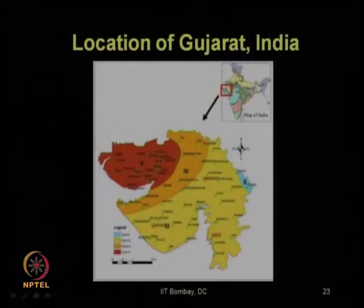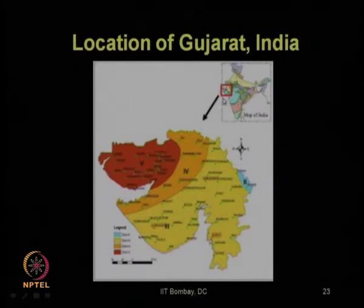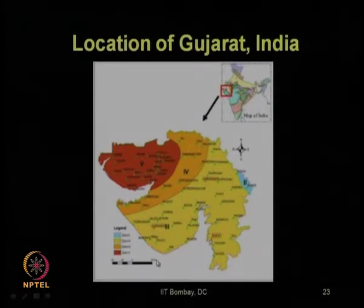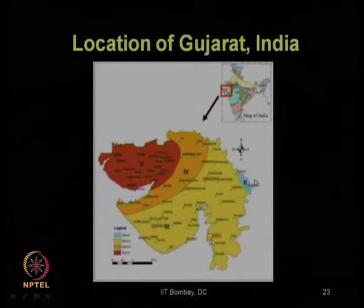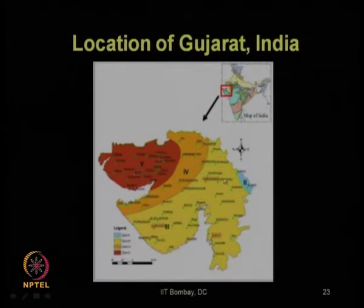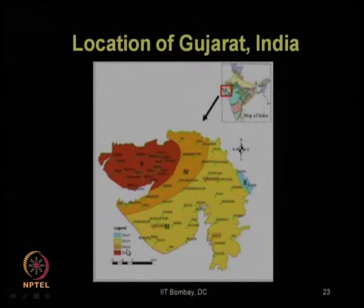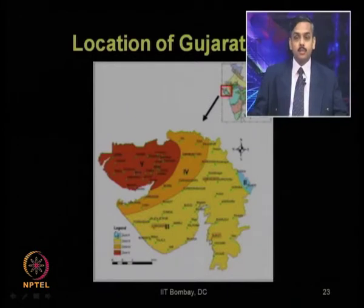Looking at the map of India, Gujarat is the westernmost state, surrounded by the Arabian Sea and the neighboring country Pakistan. The Gujarat state is divided into four seismic zones as per the Indian seismic design code IS 1893 Part 1 (2002 version), shown by four different color shadings: dark red, orange, yellow, and light sky blue.